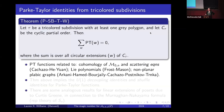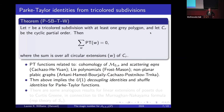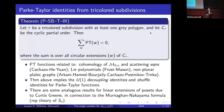Parke-Taylor factors are related to the cohomology of M_{0,n}, scattering equations, Lee polynomials, and non-planar phi graphs. From the theorem above, one can derive the well-known U(1) decoupling identities and the shuffling identities. There are also analogous results in the mathematics literature for linear extensions of posets.